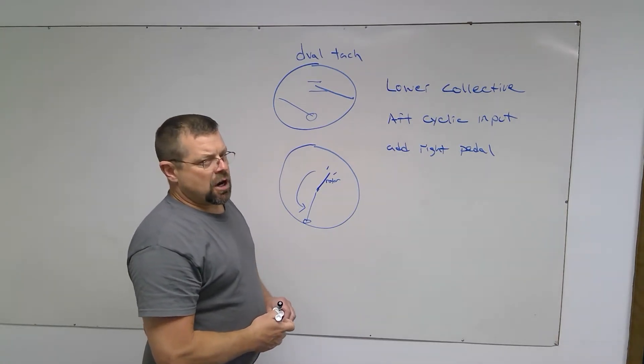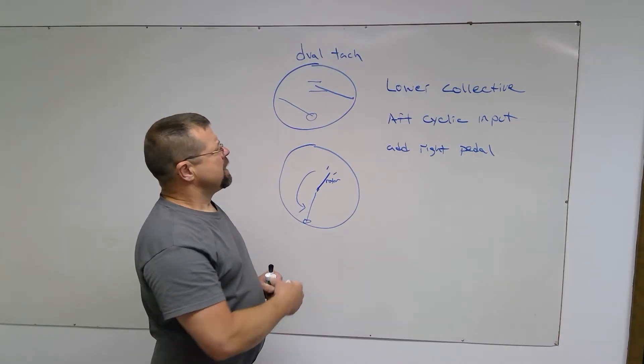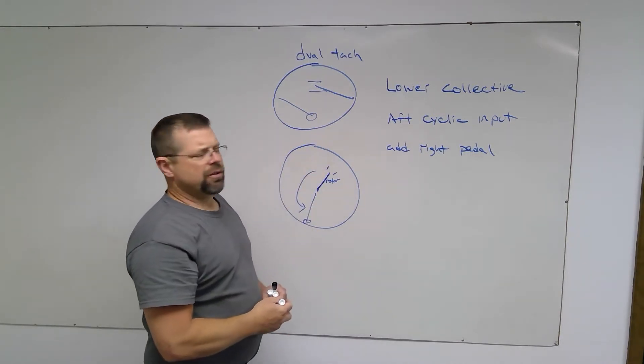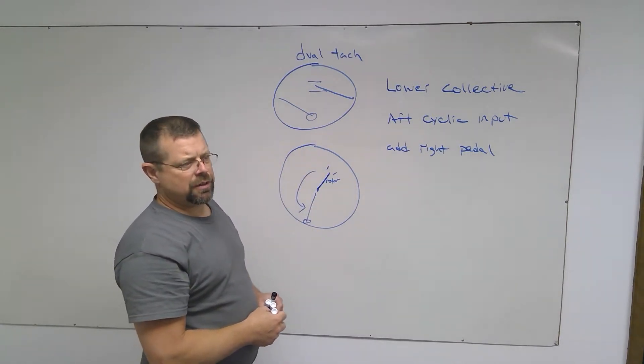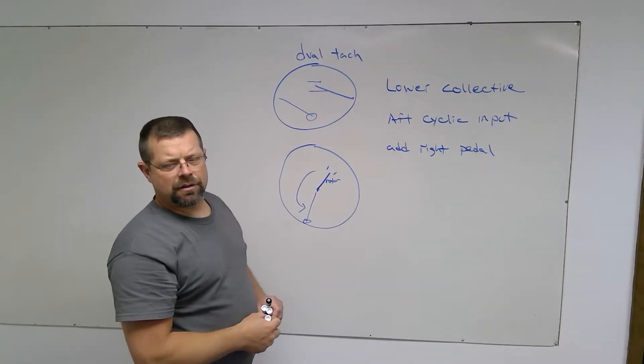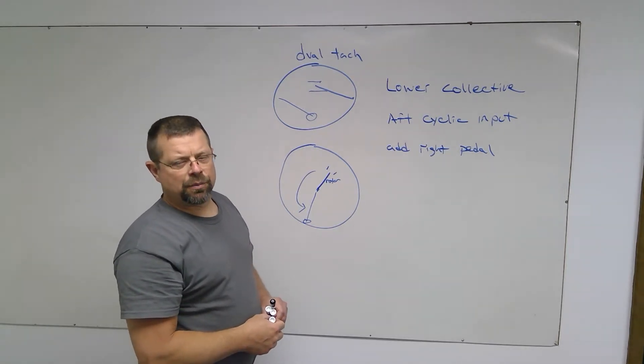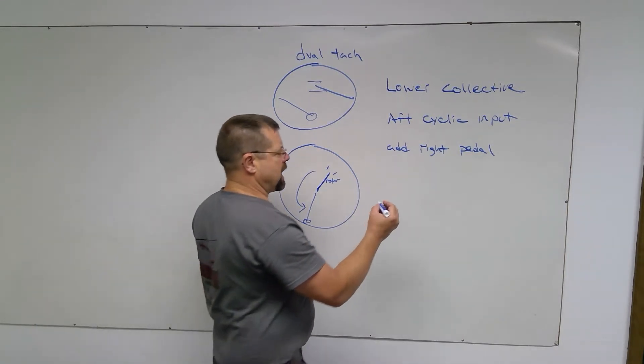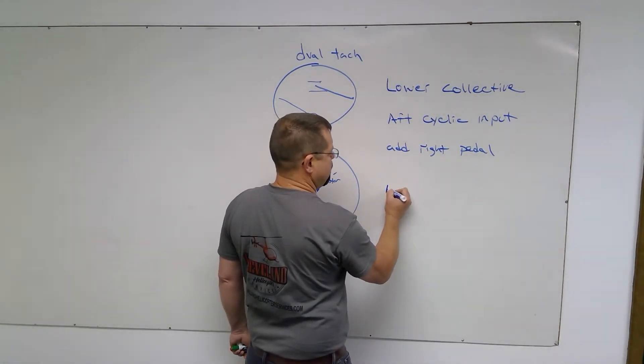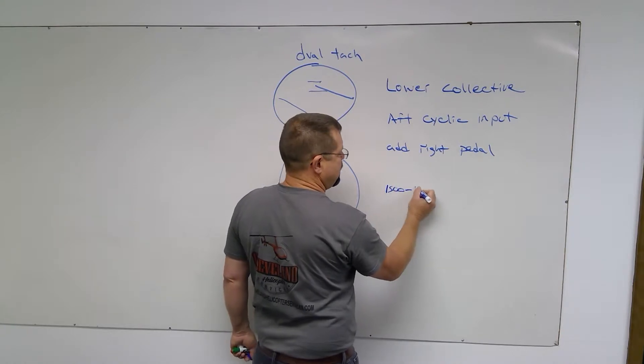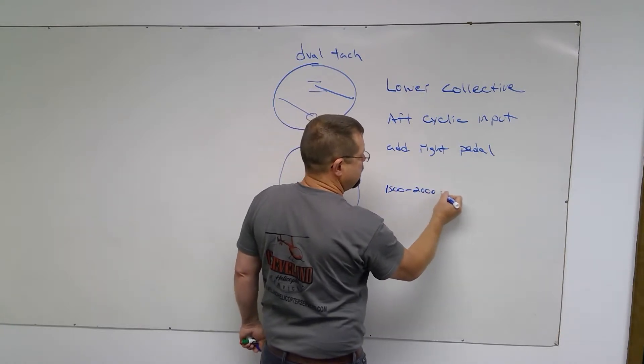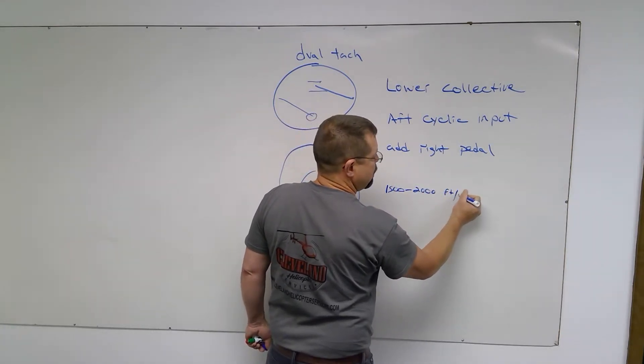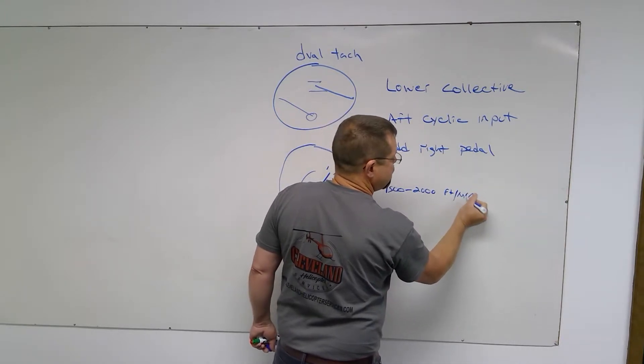Let's talk about how this is done. After the initial entry into the autorotation, now the helicopter is approaching the ground at a good rate, likely between 1,500 and 2,000 feet per minute, depending on the helicopter.